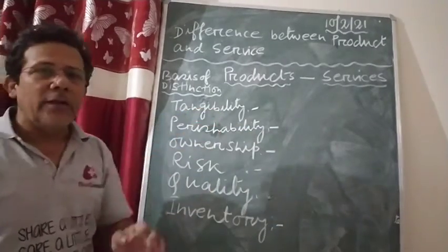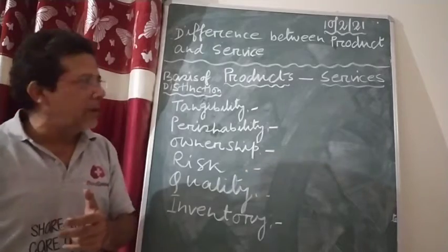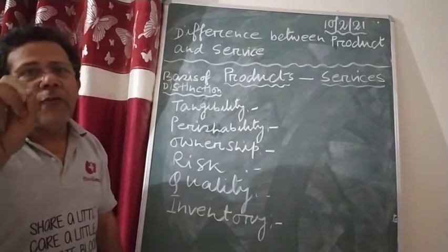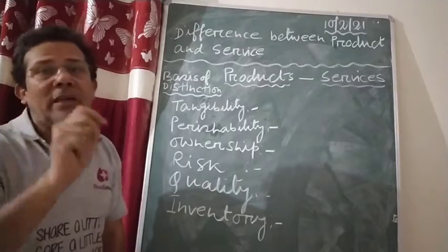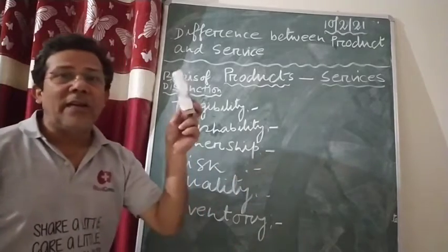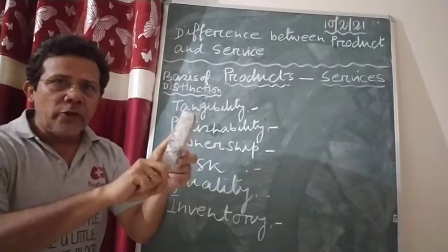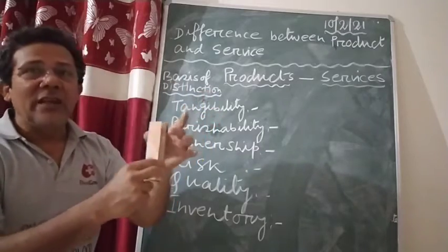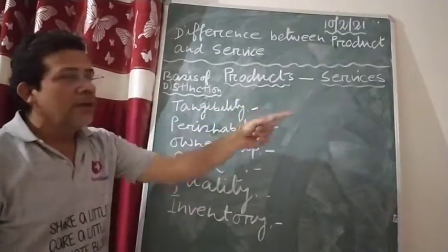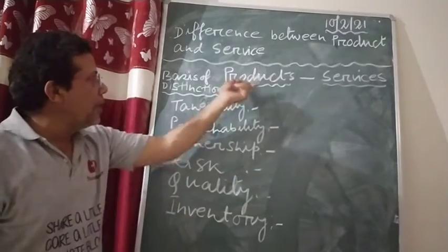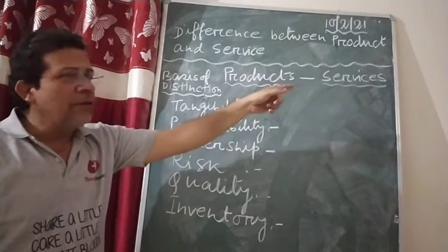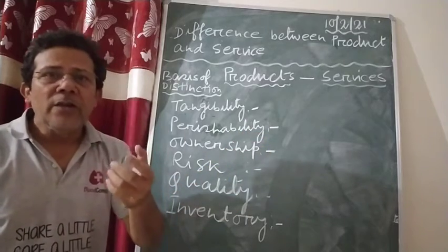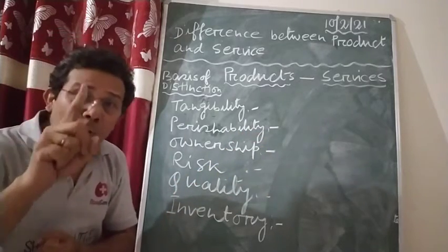The first point is tangibility — it is very important. Products are tangible, which can be seen, touched, and felt, and which have a physical existence. Like this duster — it is a product which you can touch, feel, see, and it has a physical existence. On the other hand, service is intangible. Service cannot be touched, service cannot be seen, but you can feel it.